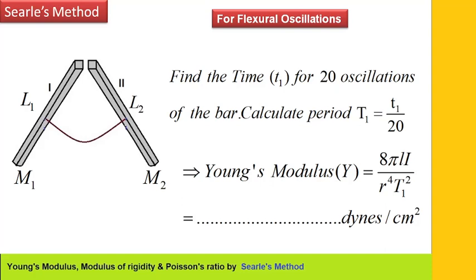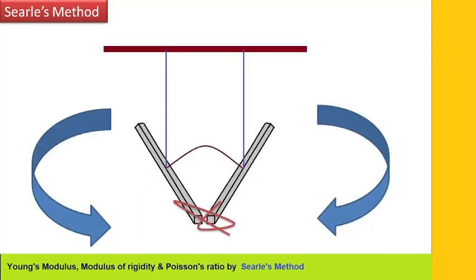Young's modulus Y is equal to 8π times small l times I (moment of inertia), divided by r⁴ times T1², where small r is the radius of the wire connected between the two bars. The unit is dynes per centimeter square. This is how both bars oscillate after the restraining thread is removed.